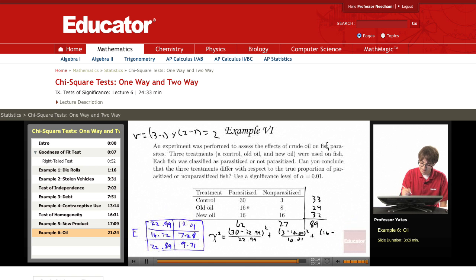Plus sixteen, I'm looking at this sixteen, that first one, minus sixteen point seven two squared, divide by sixteen point seven two. Plus eight minus seven point two eight squared, divide by seven point two eight. Plus sixteen minus twenty-two point eight nine squared, divide by twenty-two point eight nine.